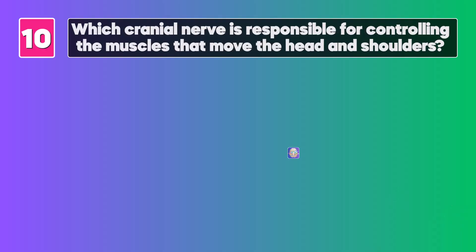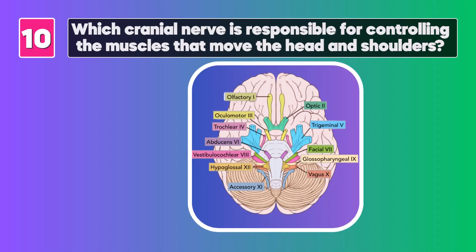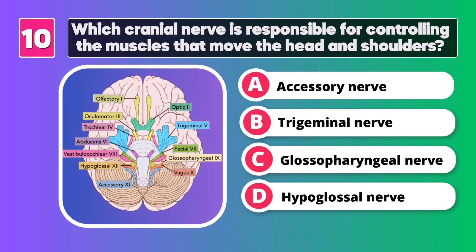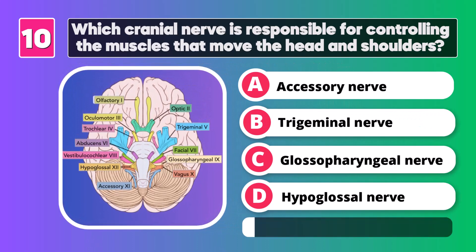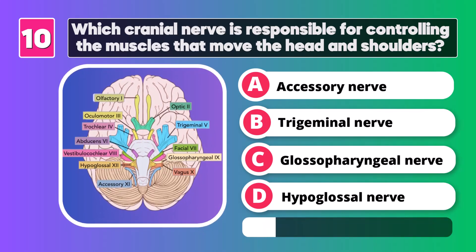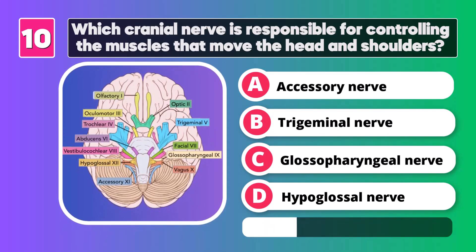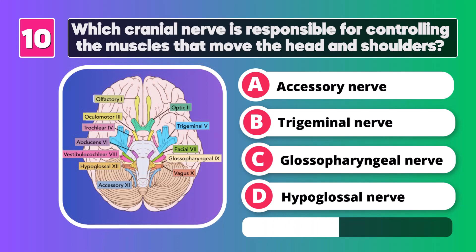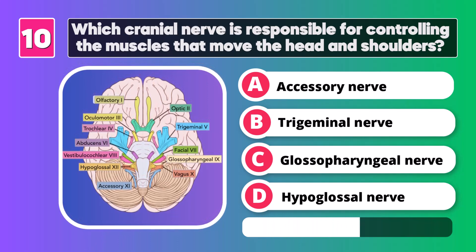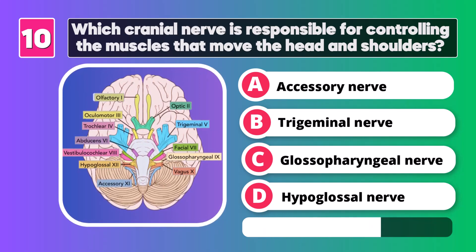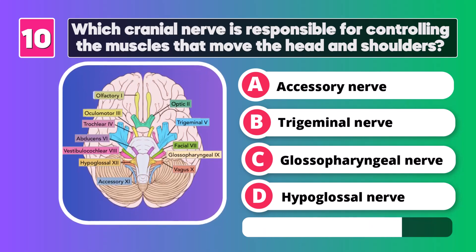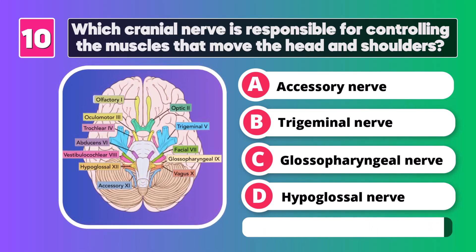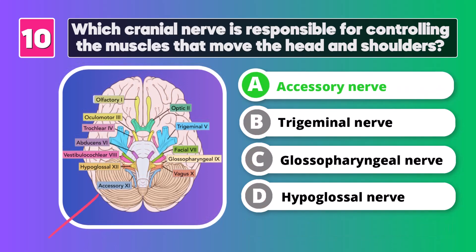Which cranial nerve is responsible for controlling the muscles that move the head and shoulders? Accessory nerve.